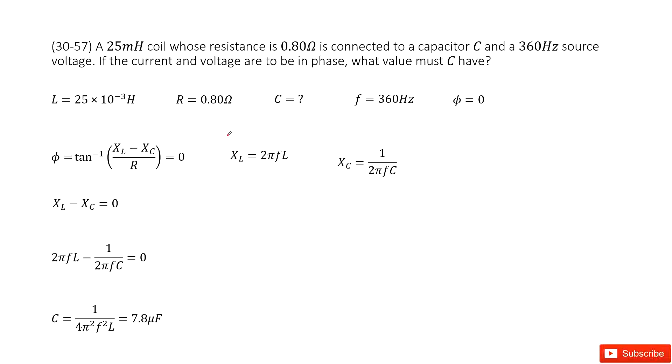Chapter 30 is about inductance, electromagnetic oscillations, and AC circuits. We have RLC circuits.